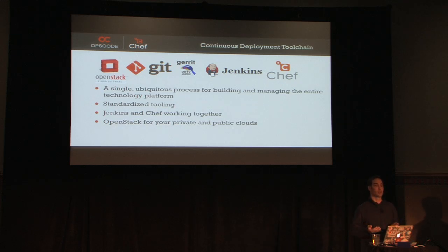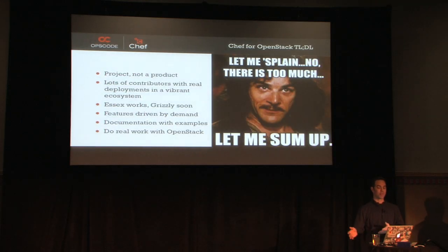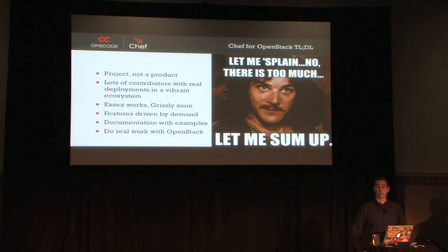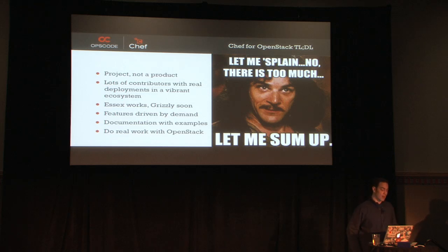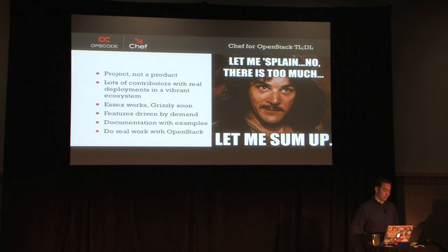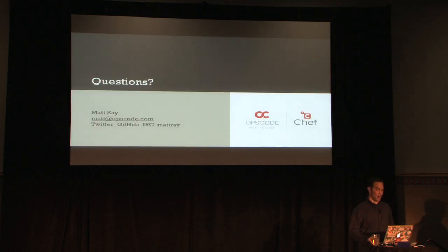Chef for OpenStack — too long, didn't listen. It's a project, not a product. It's an ecosystem of people doing work. There are lots of contributors with real deployments and a wide variety of ecosystems. Essex is working. Folsom works in a lot of branches. Grizzly works in a lot of branches and will be coming to mainline. Folsom will probably get backported. The features that show up are driven by demand — if there's something you want, send patches and it'll show up. The point is we want to do real work with OpenStack.